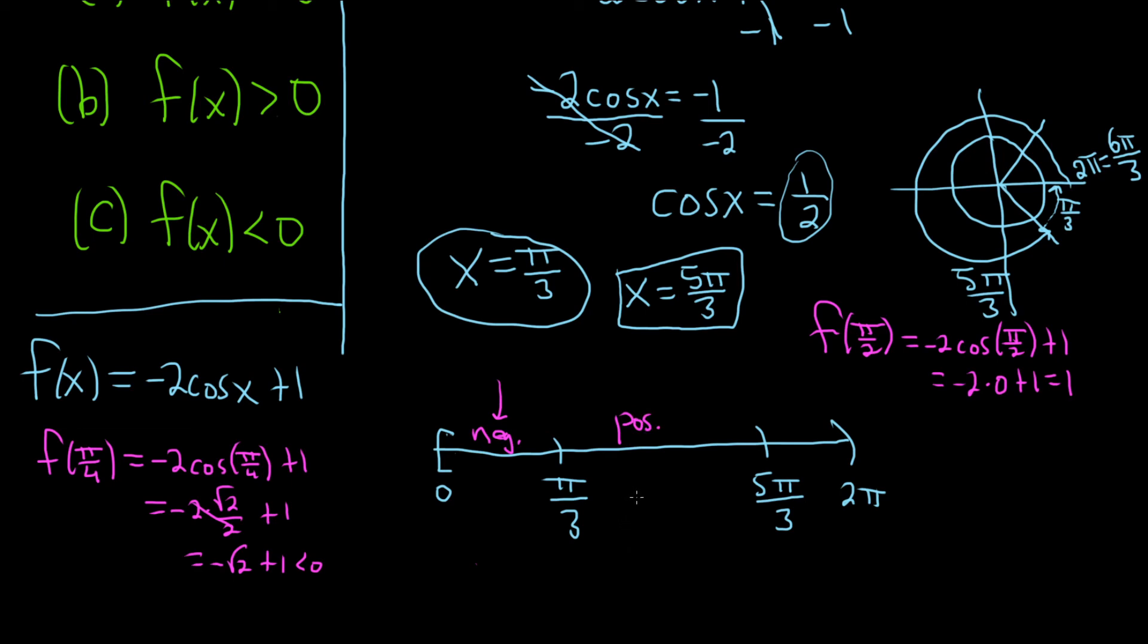And, last but not least, we need an angle between 5 pi over 3 and 2 pi. I'm thinking maybe something like 11 pi over 6 is probably the best we can do. And, let's see. That would be negative 2 cosine 11 pi over 6. Plus 1 equals negative 2. The cosine of 11 pi over 6 is the square root of 3 over 2. And, that's plus 1. So, that's equal to negative root 3 plus 1. And, root 3 is bigger than 1. So, this is negative.